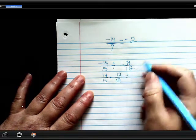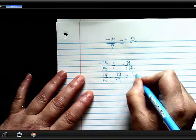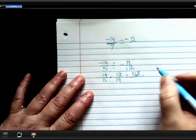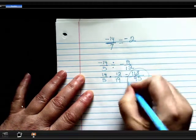So you just do top times top. 14 times 12 is 168. And then bottom times bottom. 5 times 19 is 95. And you get to leave it improper.